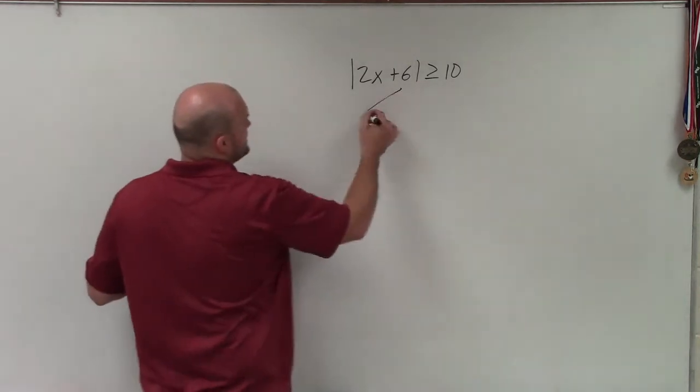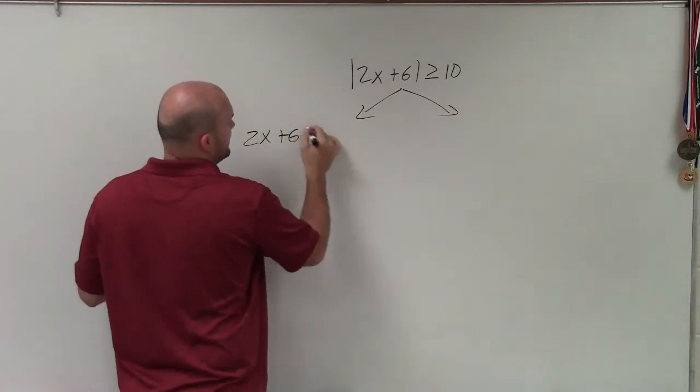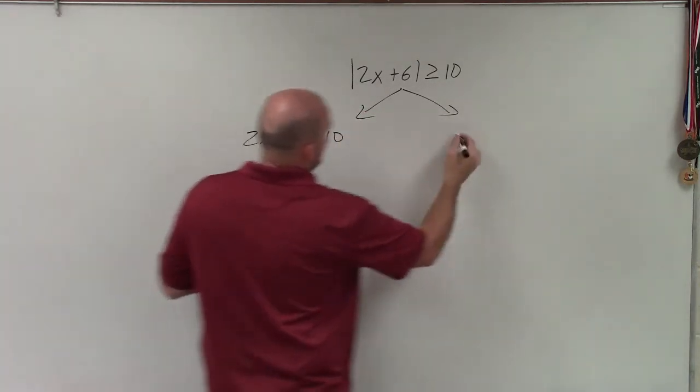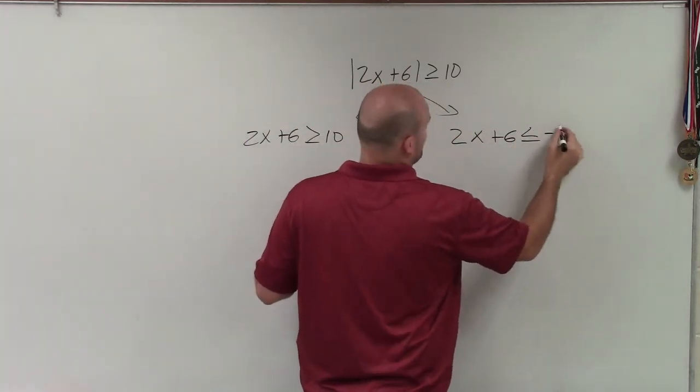So therefore, my two cases are going to look like this: 2x plus 6 is greater than or equal to 10, and 2x plus 6 is less than or equal to negative 10.